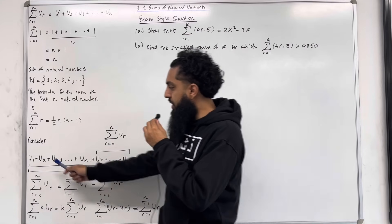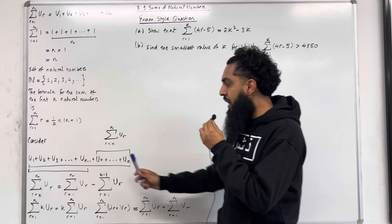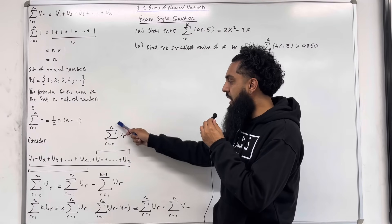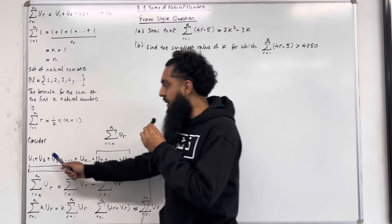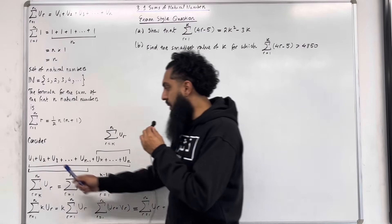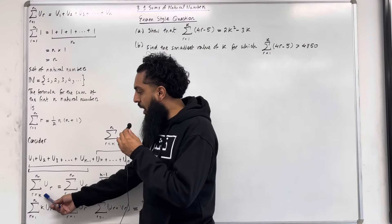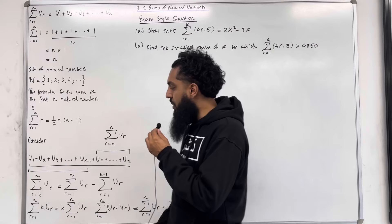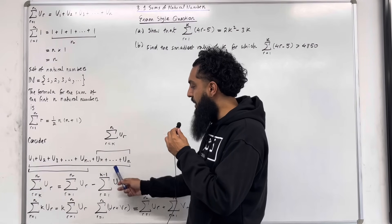Consider the sum from U1 up to U_N. I want to work out the sum from U_K up to U_N. This is denoted by the summation from R equal K to N of U_R. To work out this summation, I can take the summation from U1 up to U_N and subtract the summation from U1 up to U_{K minus 1}. So the sum from R equal K to N of U_R equals the summation from R equal 1 to N of U_R, take away the summation from R equal 1 to K minus 1 of U_R.